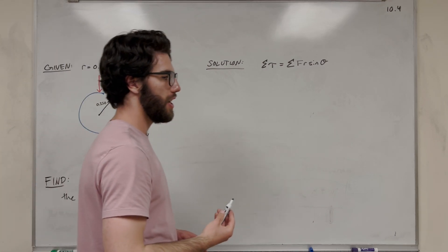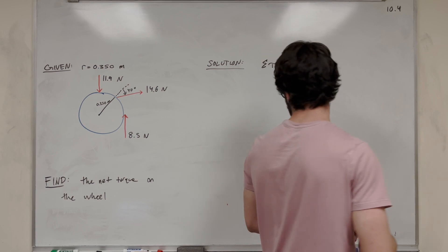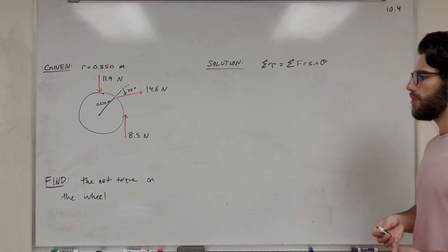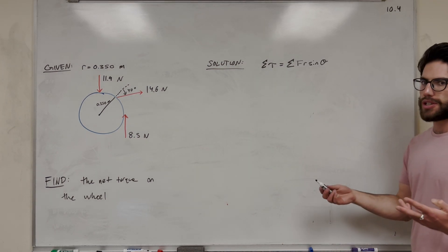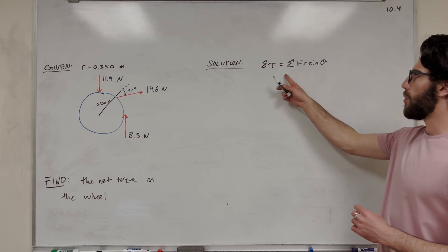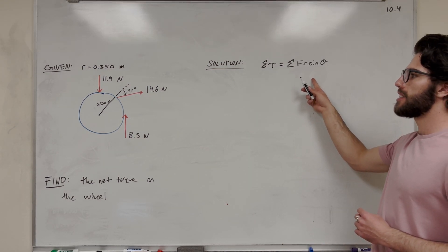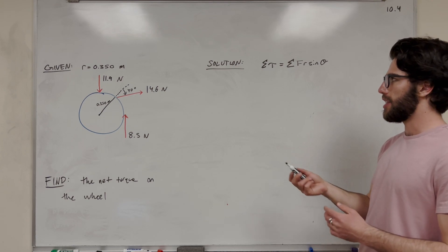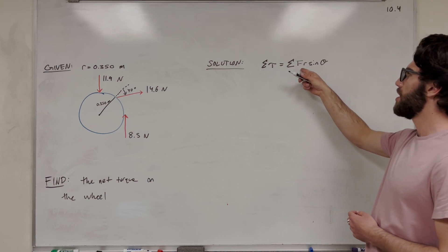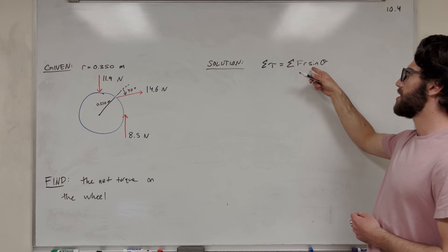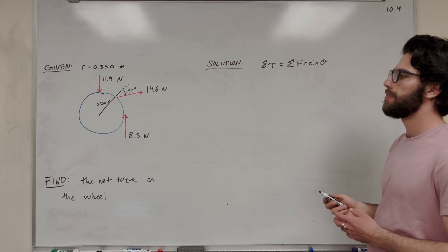And now we want to find the net torque due to these three forces on the wheel. So what is torque? Torque is force times distance, and if it acts at an angle, it's going to be a little different too. So the equation is force times distance times sine of theta.